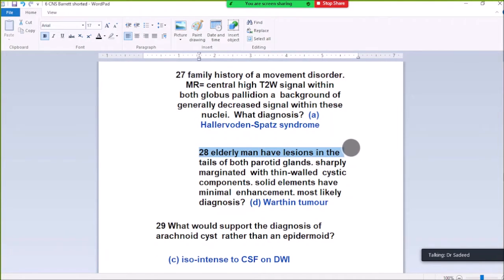Question 28. Elderly man has lesions in the tails of both parotid glands, sharply marginated with thin-walled cystic components. Solid elements have minimal enhancement. Diagnosis is Warthin tumor in adults.